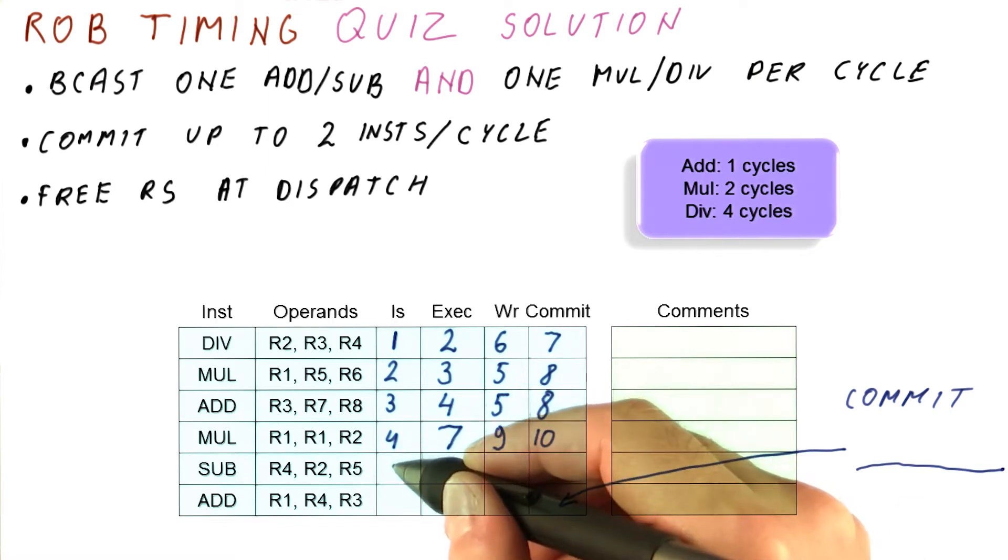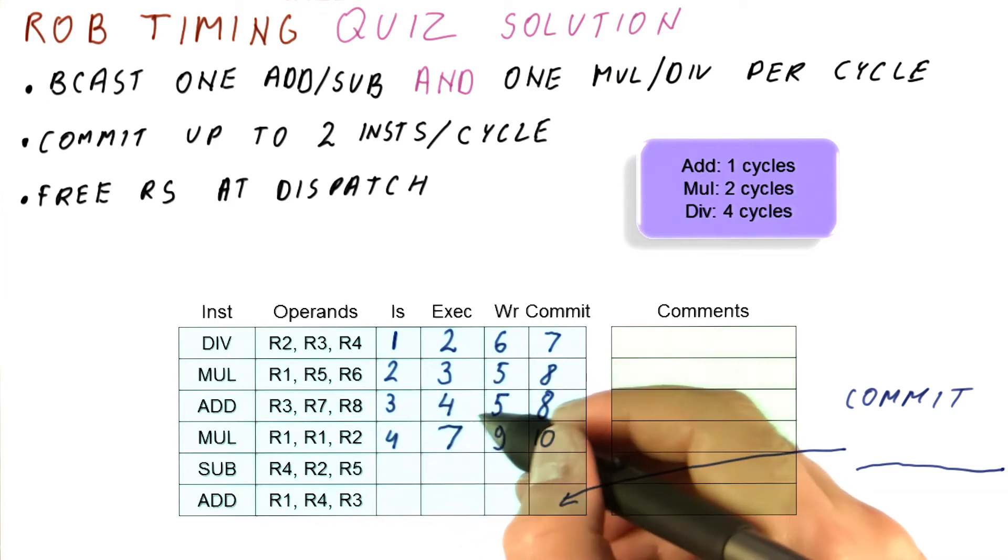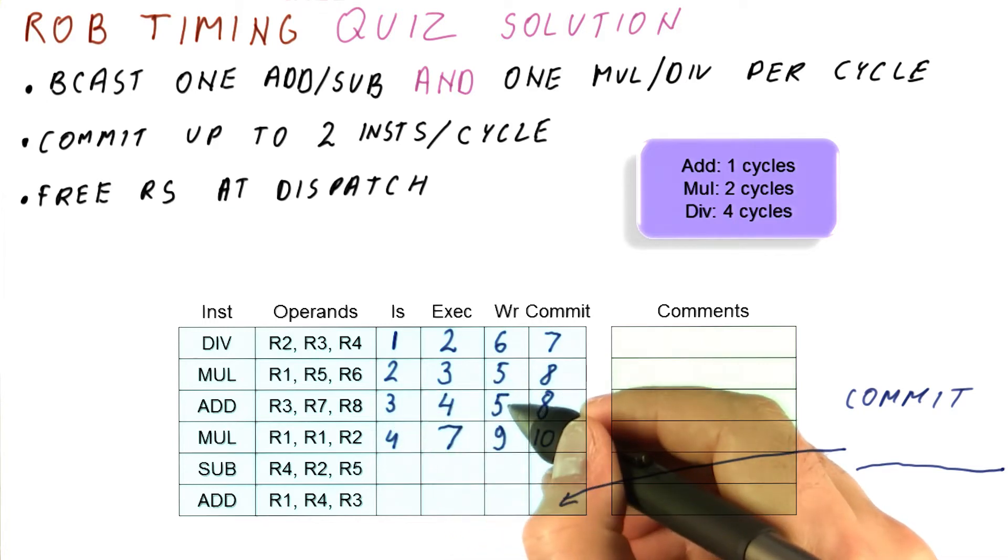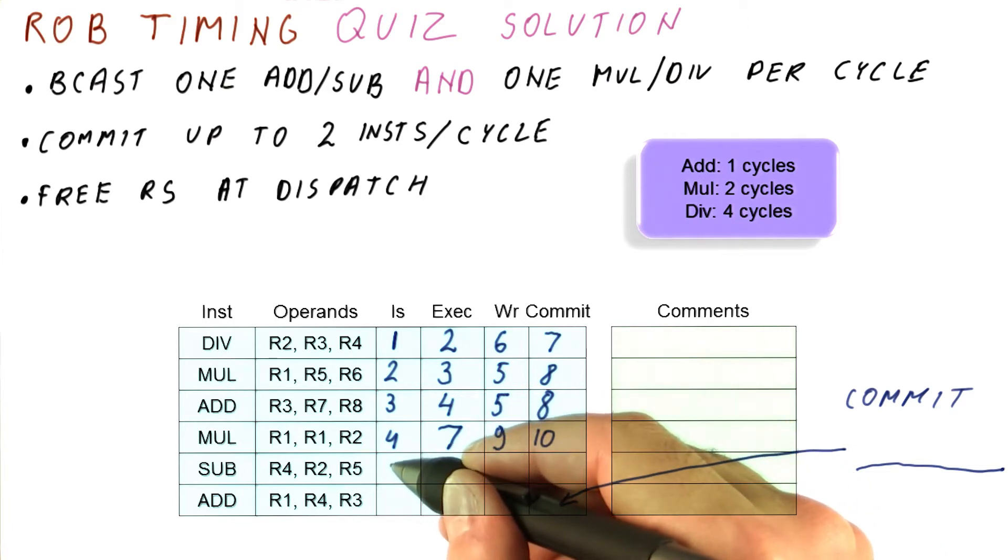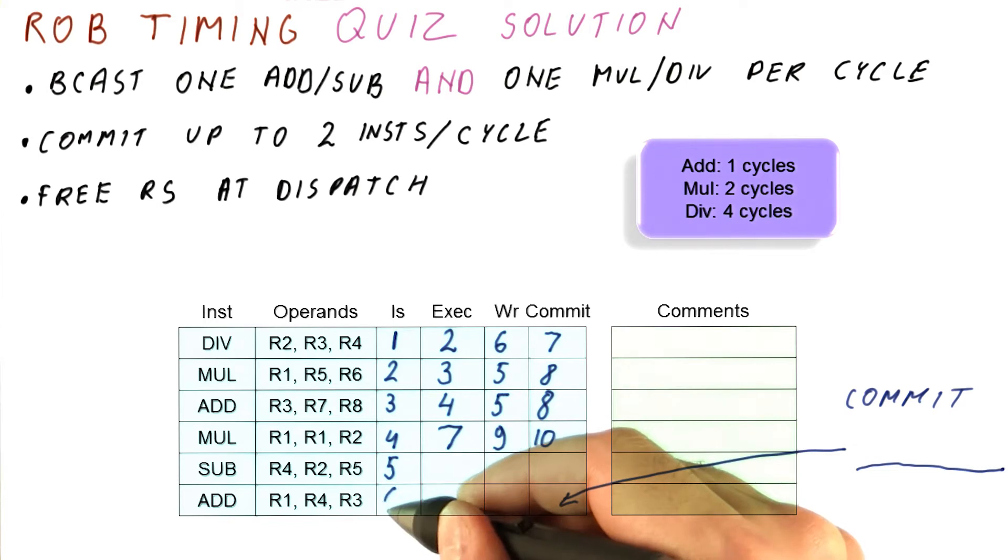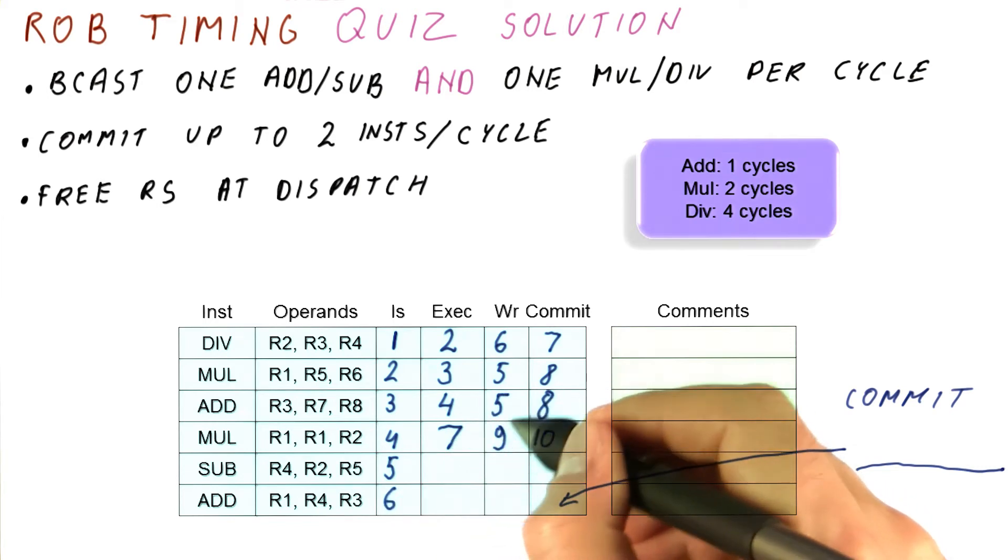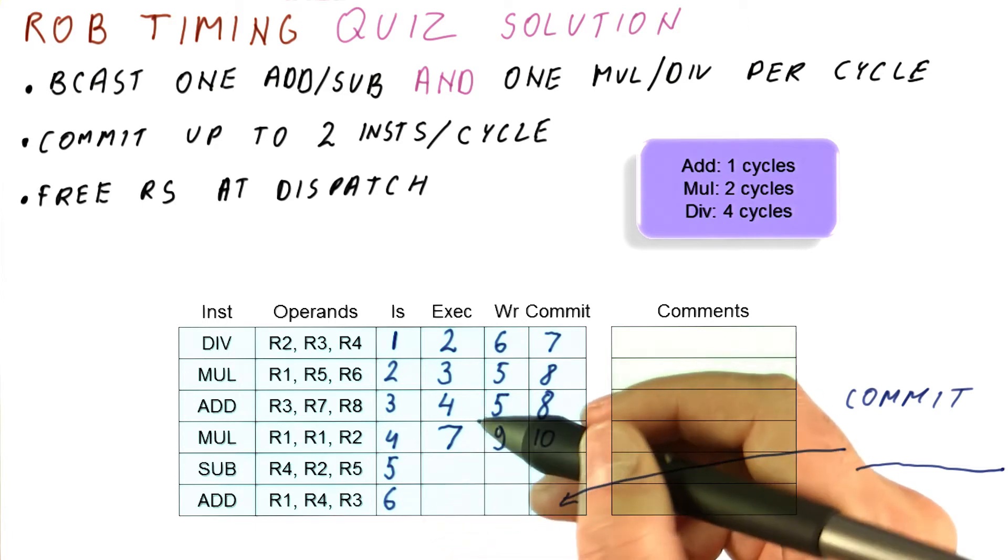So can we issue the subtract in cycle five? Yes, we can. Only one of the add subtract reservation stations is used at that time. In cycle five, it actually will be free. So from cycle six, we actually have all the reservation stations in add subtract available, but for sure one is available in cycle five. And then the third one, we can use it in cycle six. In fact, by that time, this one is also available. So we can just issue these instructions.